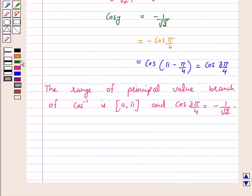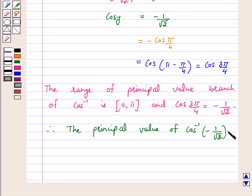Therefore, the principal value of cos inverse minus 1 over root 2 is 3 pi by 4. This is the answer for the question. I hope the question is clear to you.